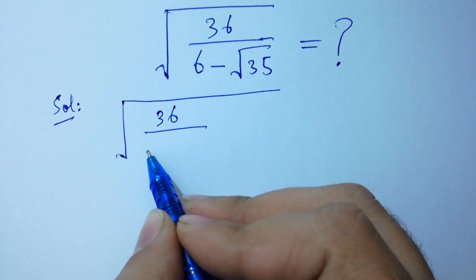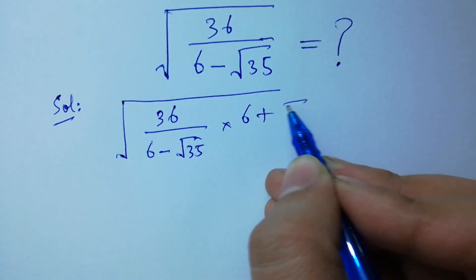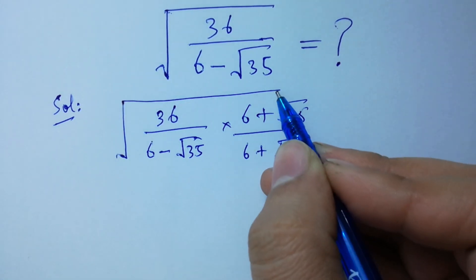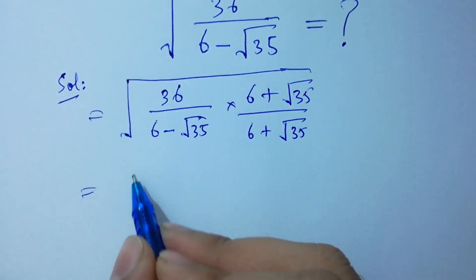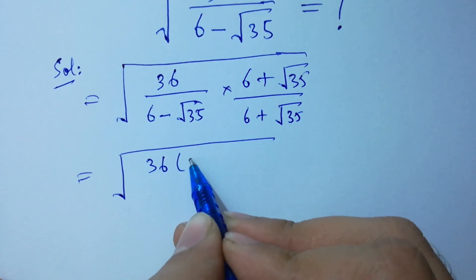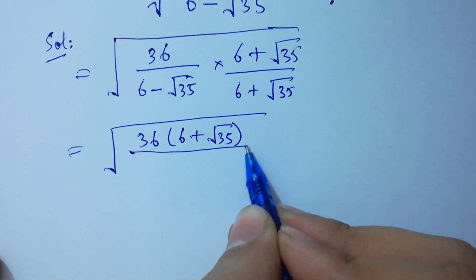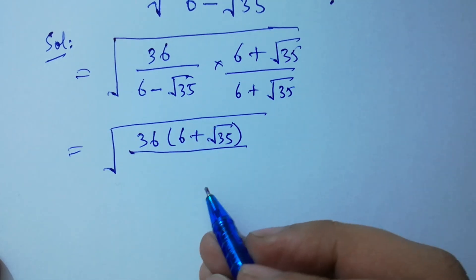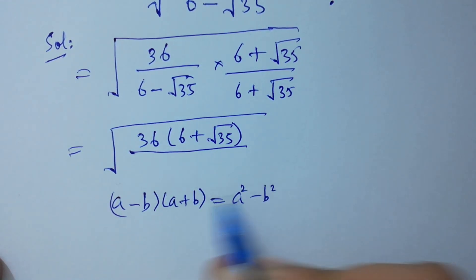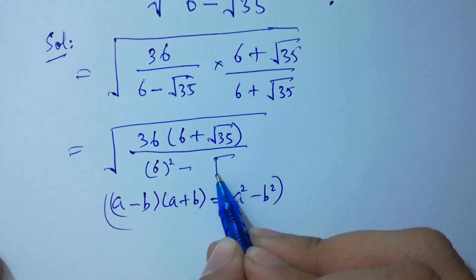We multiply: 36 over (6 minus square root of 35) times (6 plus square root of 35) over (6 plus square root of 35). So the numerator becomes 36 times (6 plus square root of 35). The denominator is of the form (a minus b)(a plus b), which equals a squared minus b squared, so it gives 6 squared minus the square root of 35 squared.